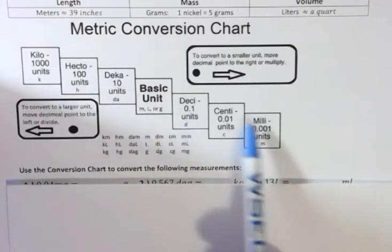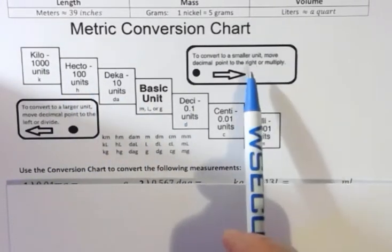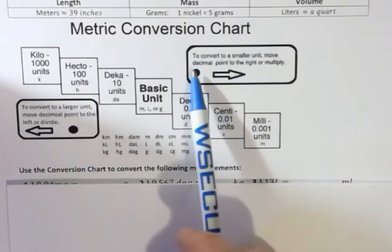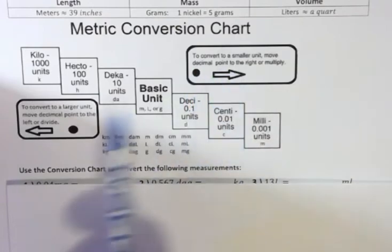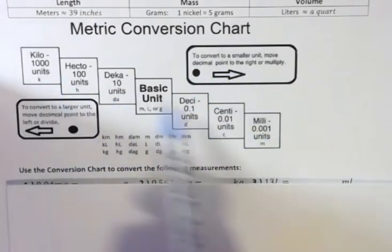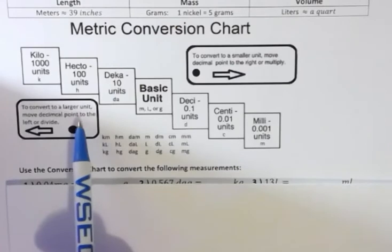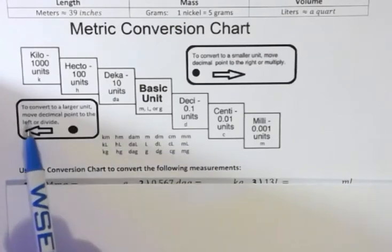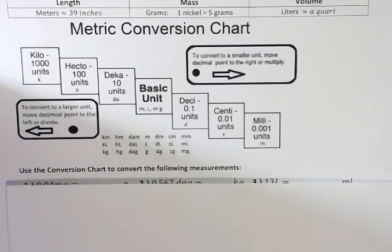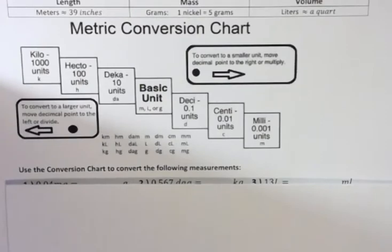As you go to the right, if you want to convert, you multiply or just move the decimal point to the right. And if you're going to the left or up the stairs here, you're going to move the decimal point to the left or divide.